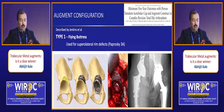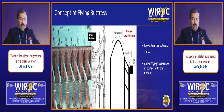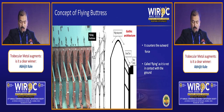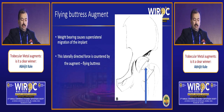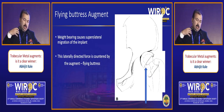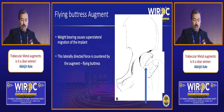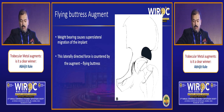The flying buttress augment is used for a superolateral rim defect as seen in Paprosky Type 3A. The concept is derived from Gothic architecture, where it supports something to prevent it from falling — the supporting structure not being in contact with the ground, hence 'flying buttress.' In the presence of a superolateral defect, there is risk of the cup migrating superiorly and outwards; a support on the superior and outer aspect negates this force.